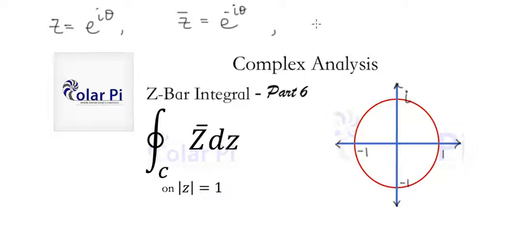And dz, furthermore, is equal to i e to the i theta d theta. And now we've got everything we need.